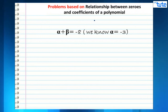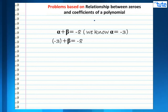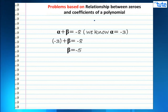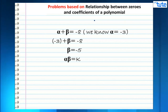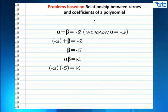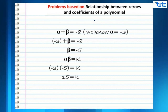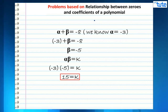Since alpha plus beta equals minus 8 and alpha equals minus 3, substituting gives beta equals minus 5. Since alpha times beta equals k, we get minus 3 times minus 5 equals 15. Therefore the value of k in this polynomial is 15.